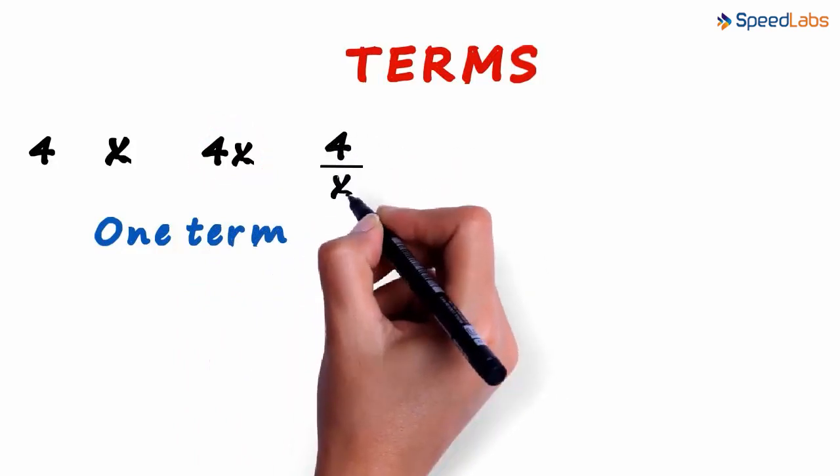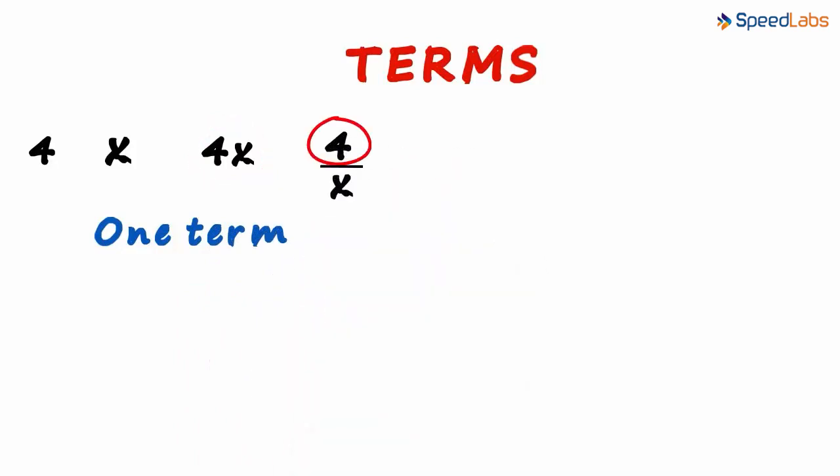What about 4 divided by x? It's one term divided by another term, and in its entirety is also one term. So when two single terms are multiplied or divided, it remains a single term.